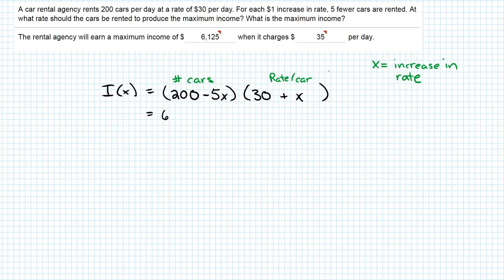200 times 30 gives me 6,000. 200 times X is plus 200X. Negative 5X times 30 gives me negative 150X. And negative 5 times X gives me negative 5X squared. Make sure you don't forget to include that coefficient there. If it's negative 5, make sure it's negative 5X.